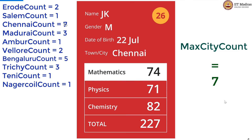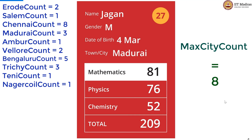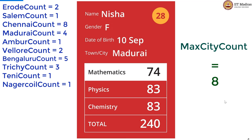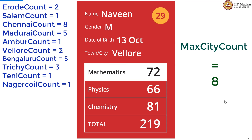Chennai again — 8 students in Chennai. And that means max city count is also updated to 8. Now there is 4 Madurai, 5 Madurai, and 3 Velour. And this is the last card, so our max city count is 8. Thank you.